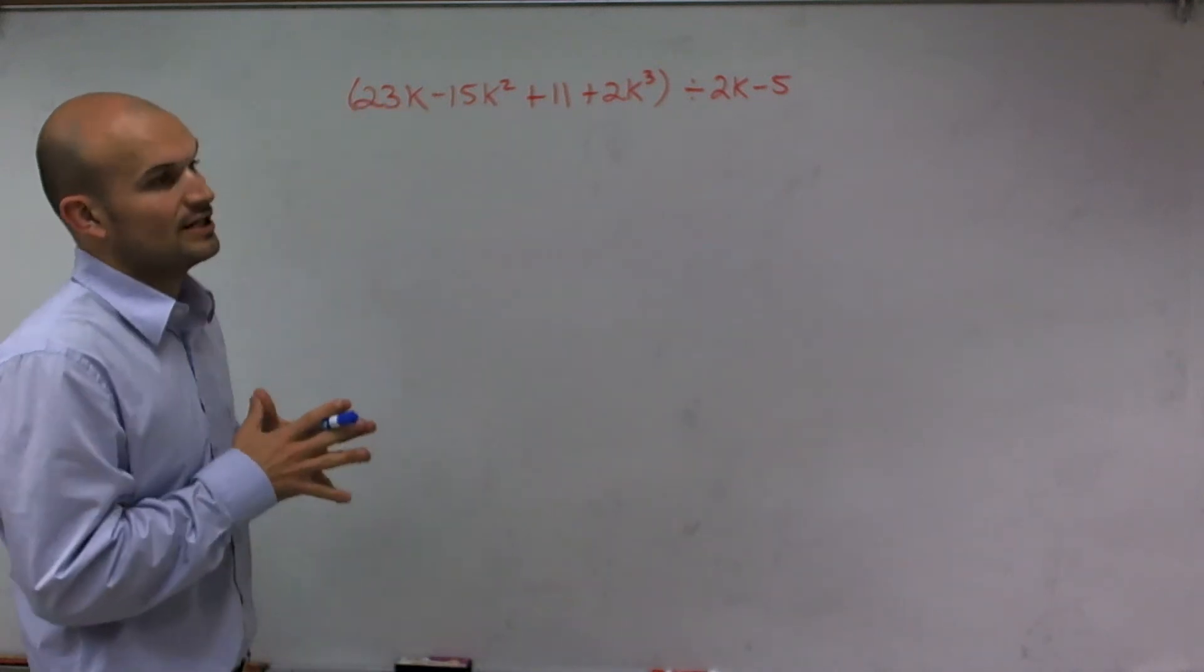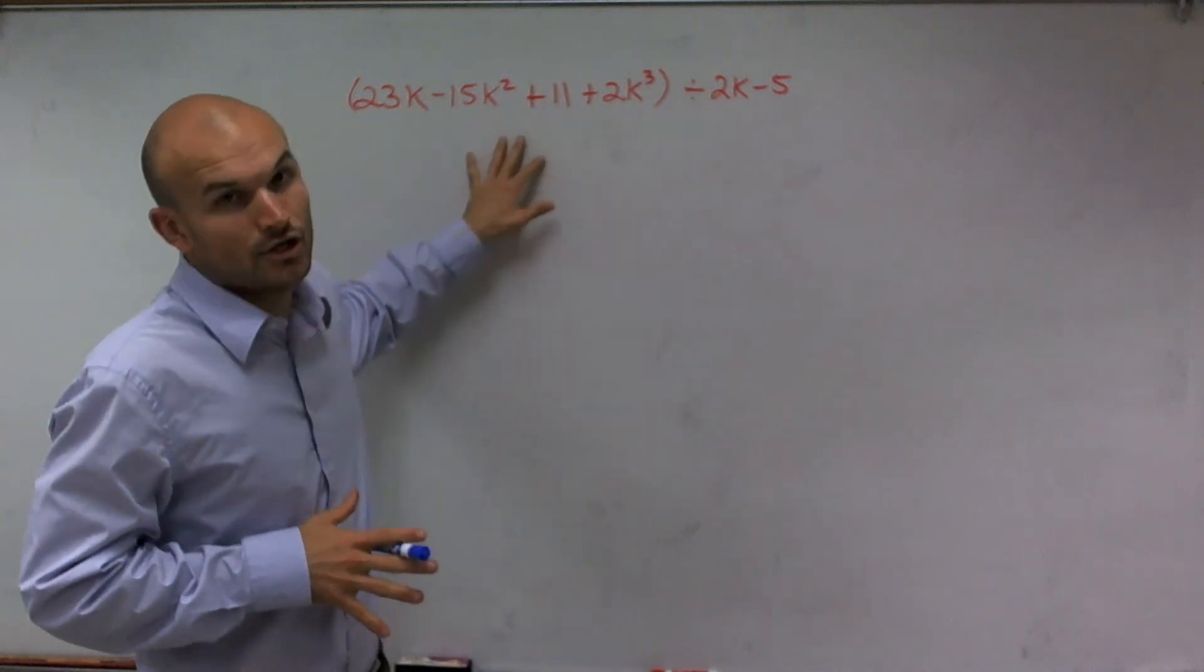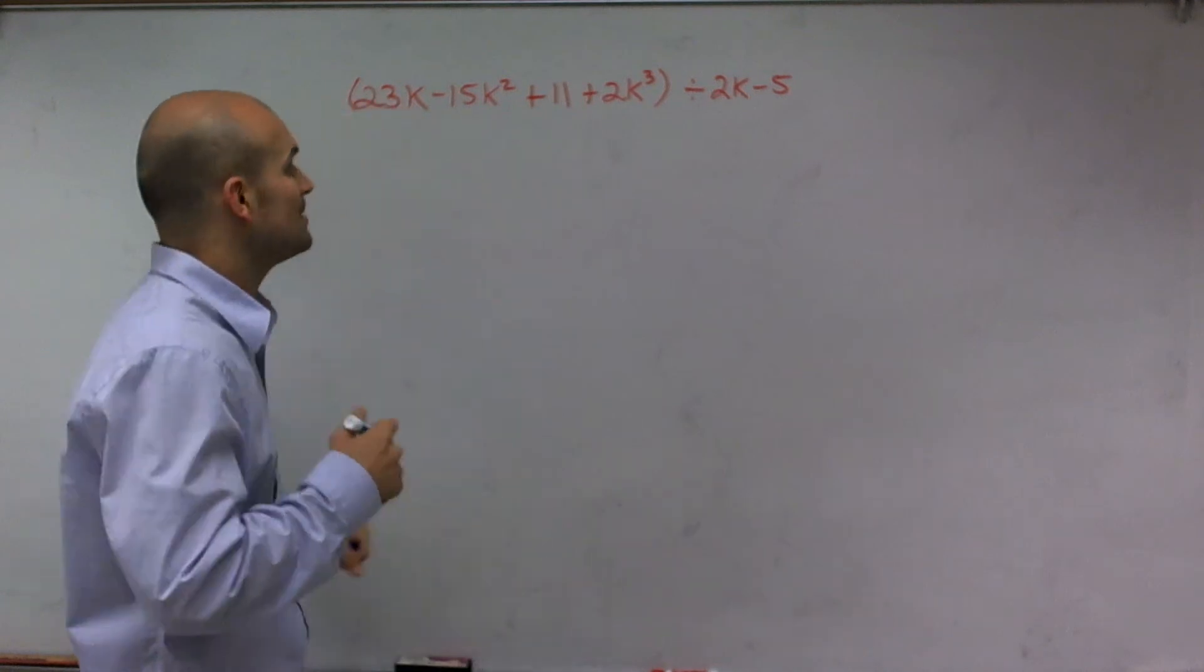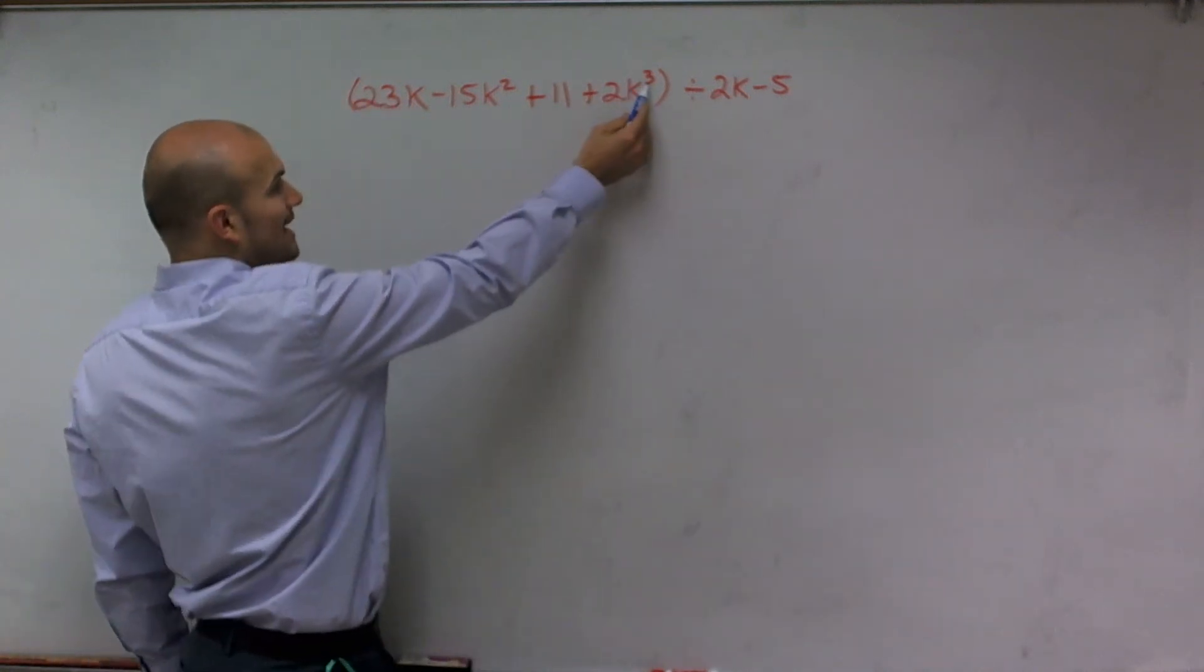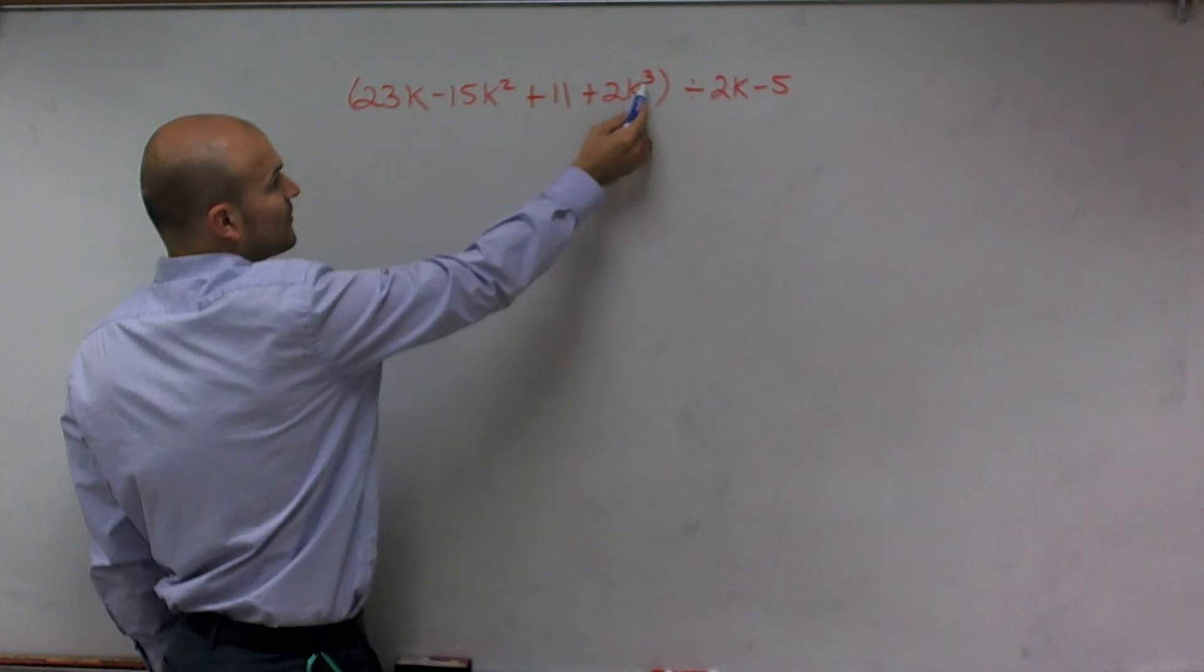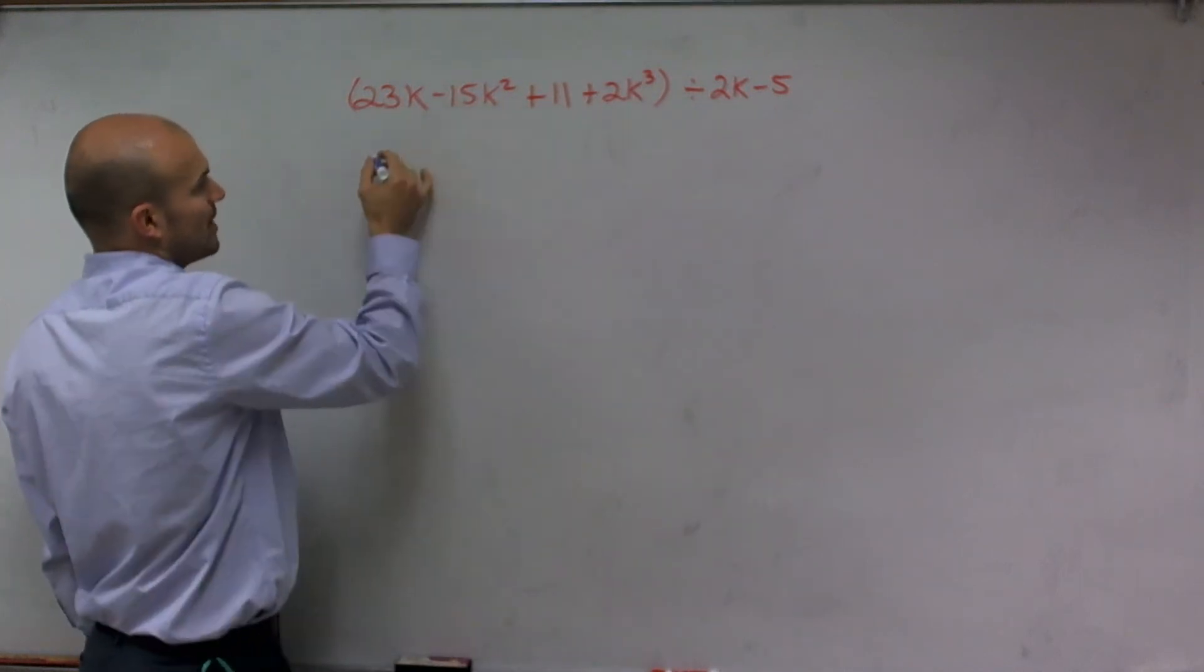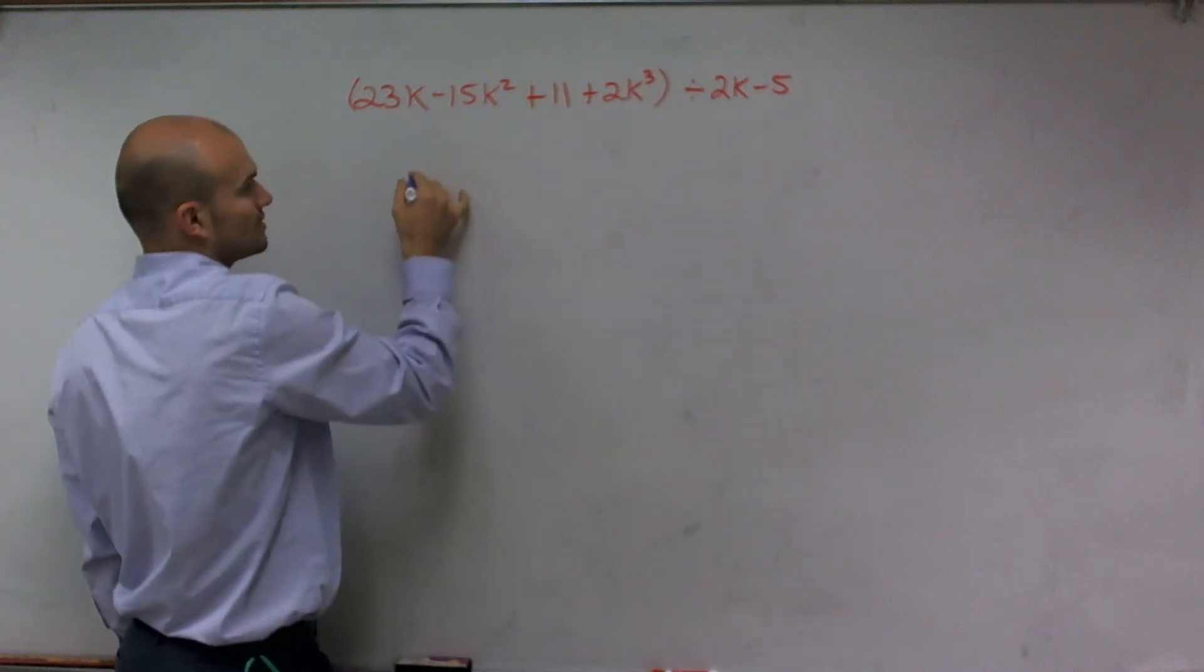So first thing we need to do, if we're going to be dividing a binomial into a polynomial, we need to make sure that polynomial is in descending order. And what I mean by that is I need to have my highest exponent, which we call our degree first, and then we need to have descending order of our exponents. So I'm going to rewrite my polynomial. Actually, let's just rewrite it in long division.